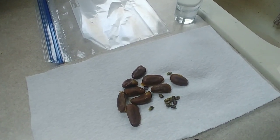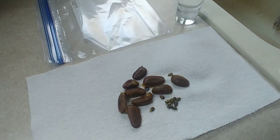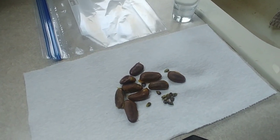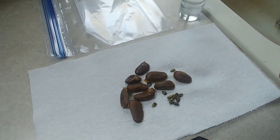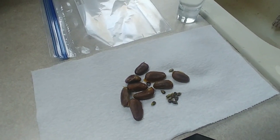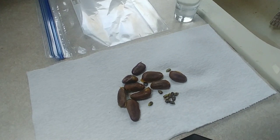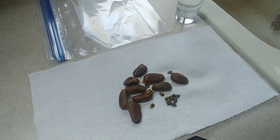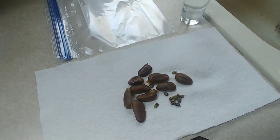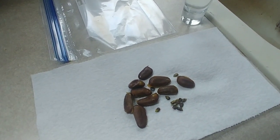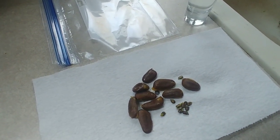Now if I'm doing long-term seed storage where I'm going to maybe plant the seeds in a year or two, I'll just take the seeds after they've dried out on the counter, I'll stick them into a plastic bag and stick them in the deep freezer. But since I'm going to plant these in the spring, I need to stratify them so that way they'll go ahead and sprout and grow.